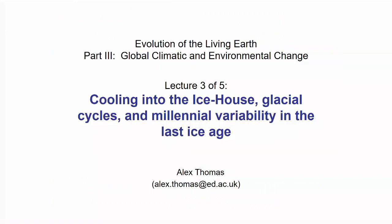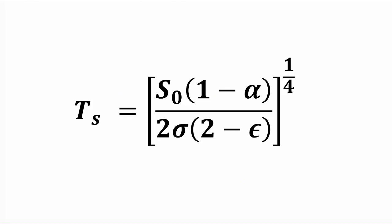We're going to be looking at slightly shorter timescales for this lecture. We're going to be thinking about this key equation: changes in the solar flux — the amount of energy received by the Earth from the Sun — the reflectivity of the planet, and the emissivity of the atmosphere.